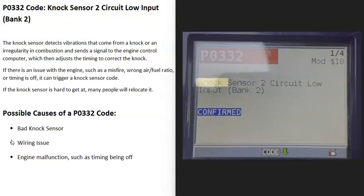Today I'm talking about a P0332 code, what it is and how you go about fixing it. A P0332 code is a knock sensor 2 circuit low input bank 2.